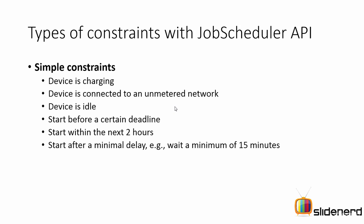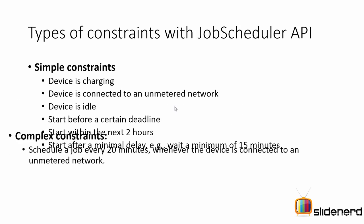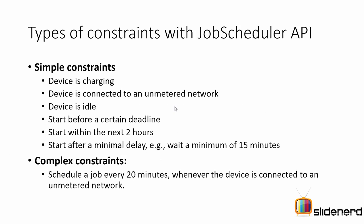So what are complex constraints? You can combine all the constraints together — for example, schedule a job every 20 minutes when the device is connected to an unmetered network and when Wi-Fi is available. You can specify these constraints to make your Job Scheduler really smart about how you want to process background tasks.